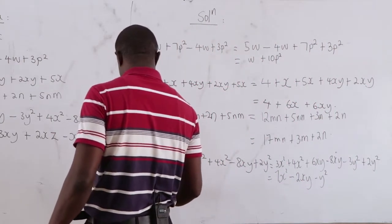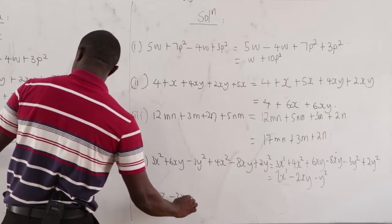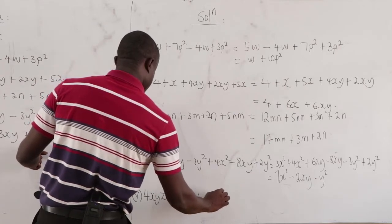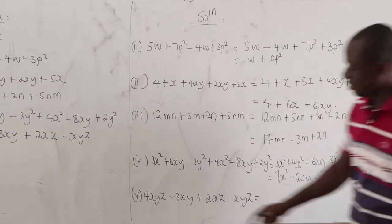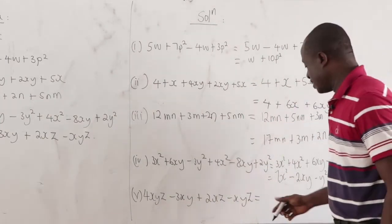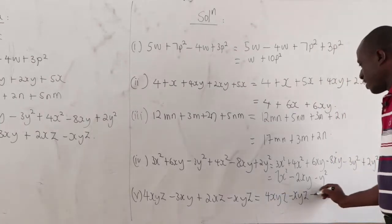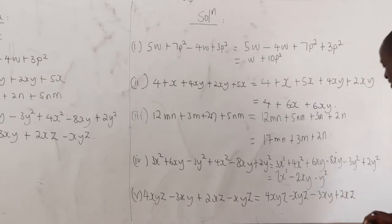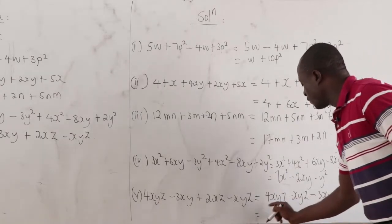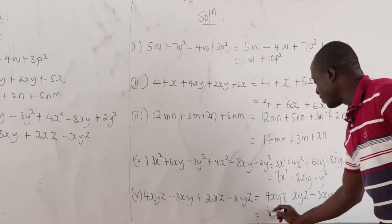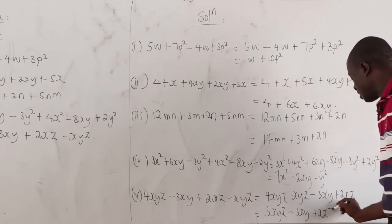Part v: 4xyz minus 3xy plus 2xyz minus xyz. Group like terms: 4xyz minus xyz equals 3xyz. And negative 3xy and 2xz cannot be combined. So the answer is 3xyz minus 3xy plus 2xz.